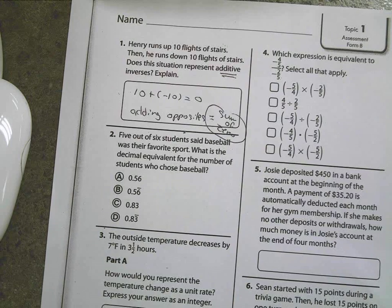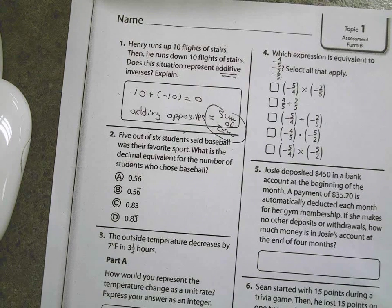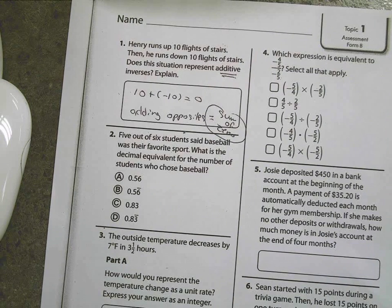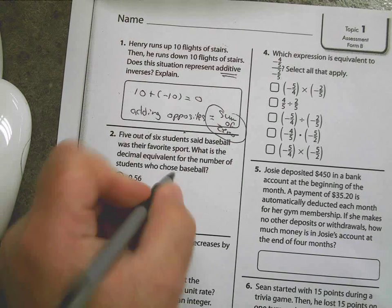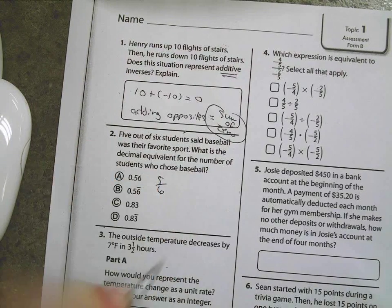Question number two. Five out of six students said baseball was their favorite sport. What's the decimal equivalent? Five out of six. Slow your mind down.